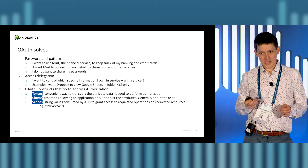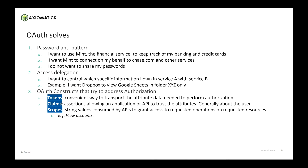OAuth was originally invented not for authorization. I know it stands for open authorization, but it was actually invented to avoid sharing passwords. The typical use case is: you have a bank account with Bank of America, and you start using Mint to keep track of your spending. Even today, Mint will literally ask you for your Bank of America password, which they shouldn't — they should use OAuth instead. OAuth was invented to avoid you having to share your password with a third party so they can connect on your behalf. So it's access delegation. It's not really authorization.